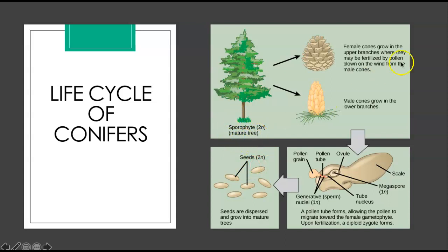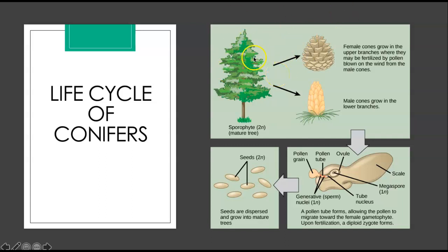Female cones grow in the upper branches of trees, where they can be fertilized by pollen blown on the wind from male cones on other trees. The male cones on the same tree occur in the lower branches. This is important because the organism does not want to self-pollinate. Self-pollination is basically inbreeding — similar to why humans avoid having children with close relatives, as it can lead to genetic diseases. Keeping female cones on upper branches and male cones on lower branches is one way this organism tries to prevent inbreeding.